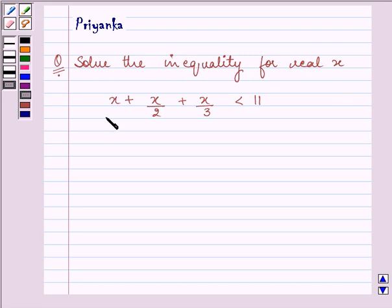The inequality given to us is x plus x by 2 plus x by 3 is less than 11.